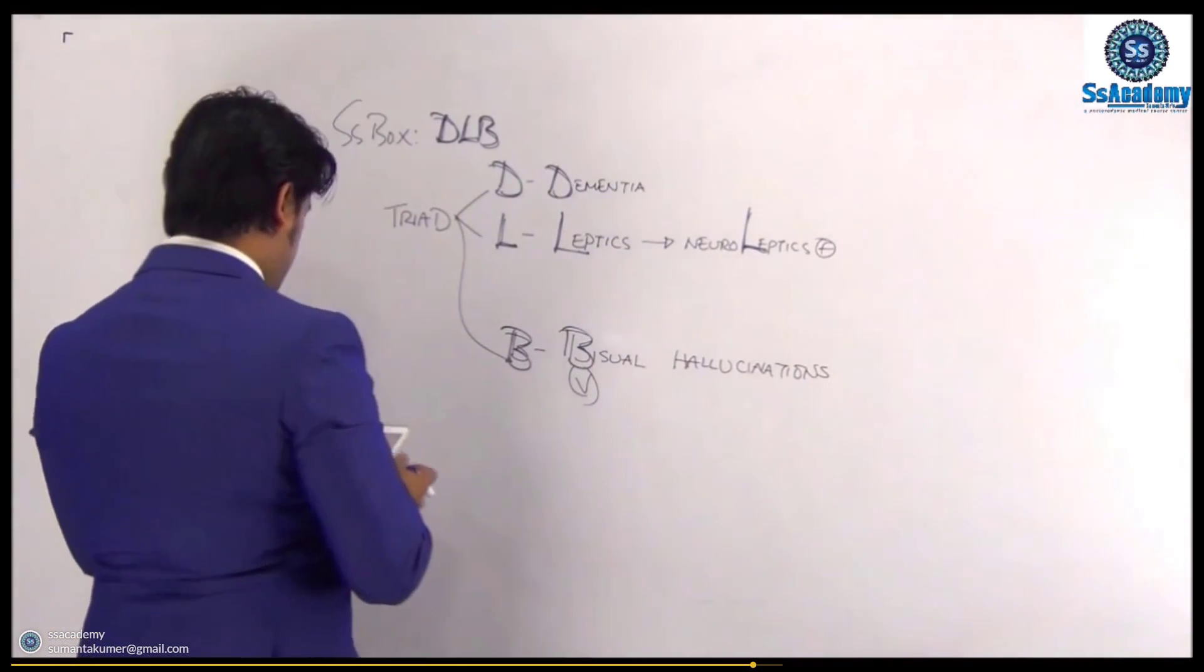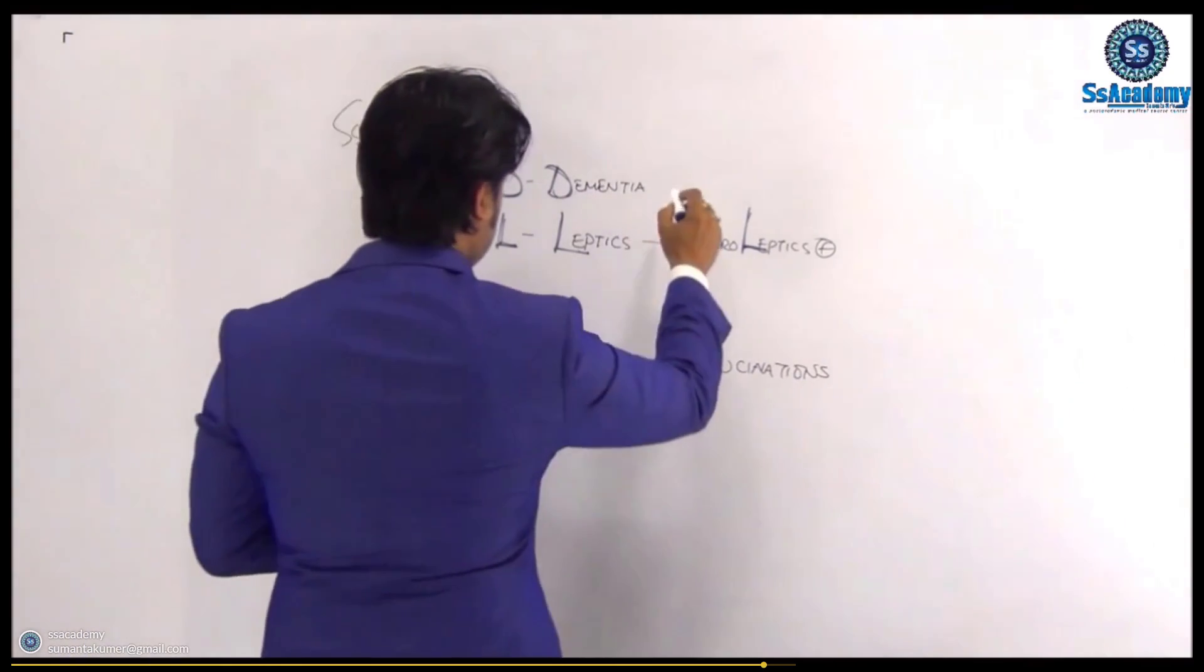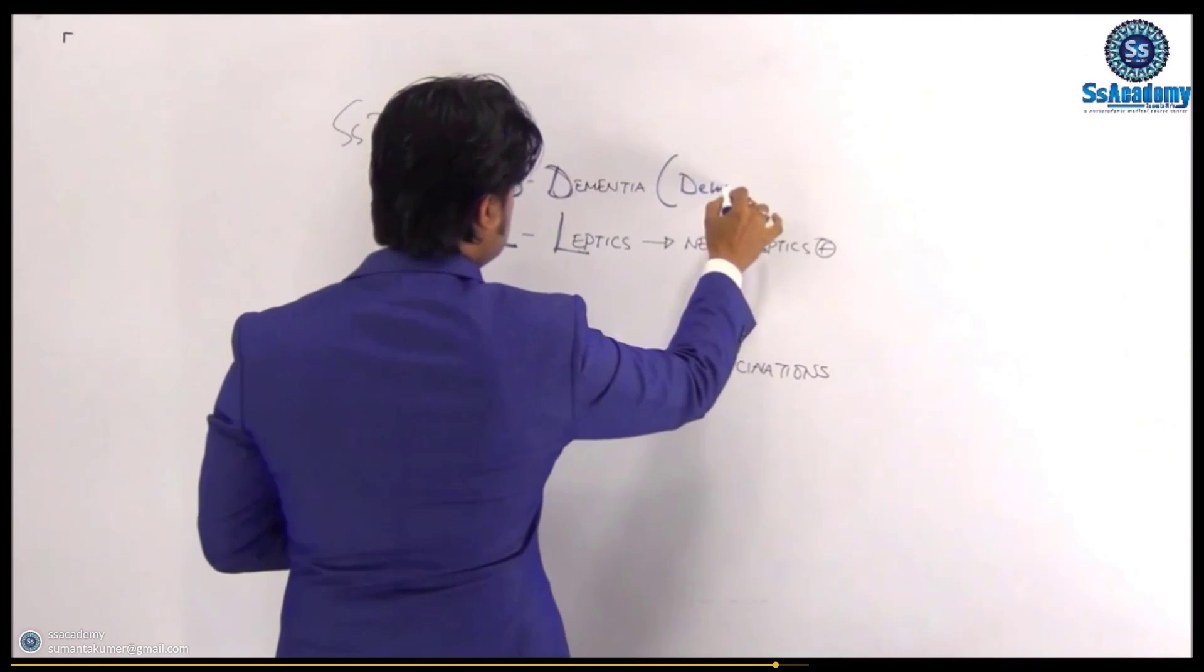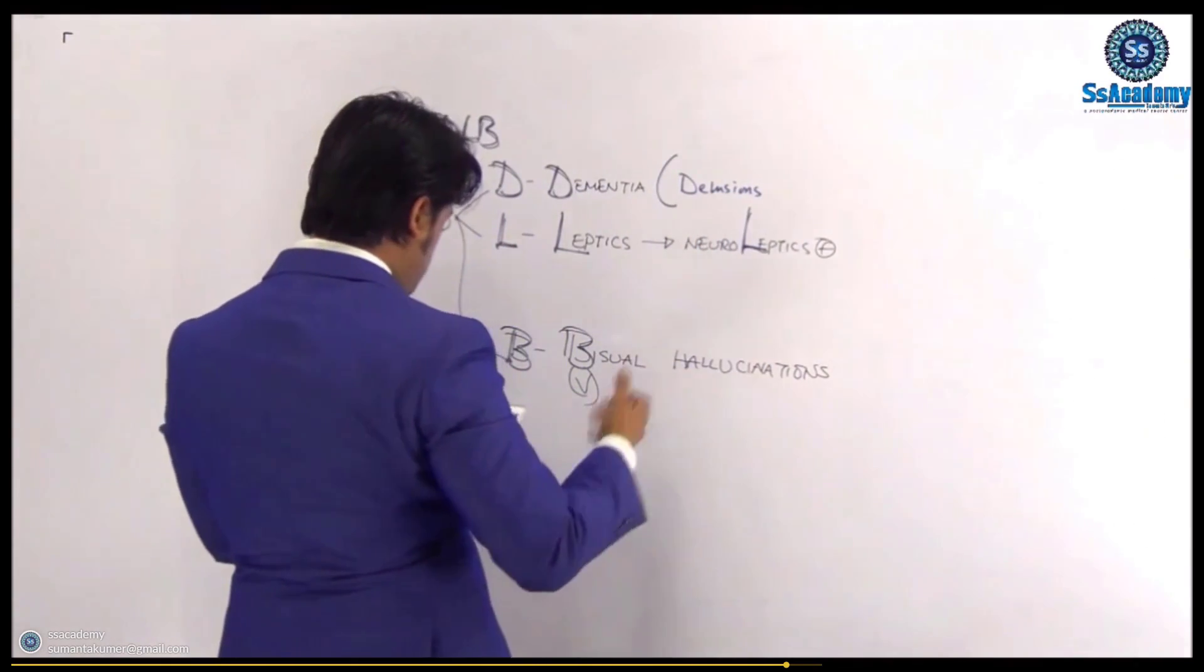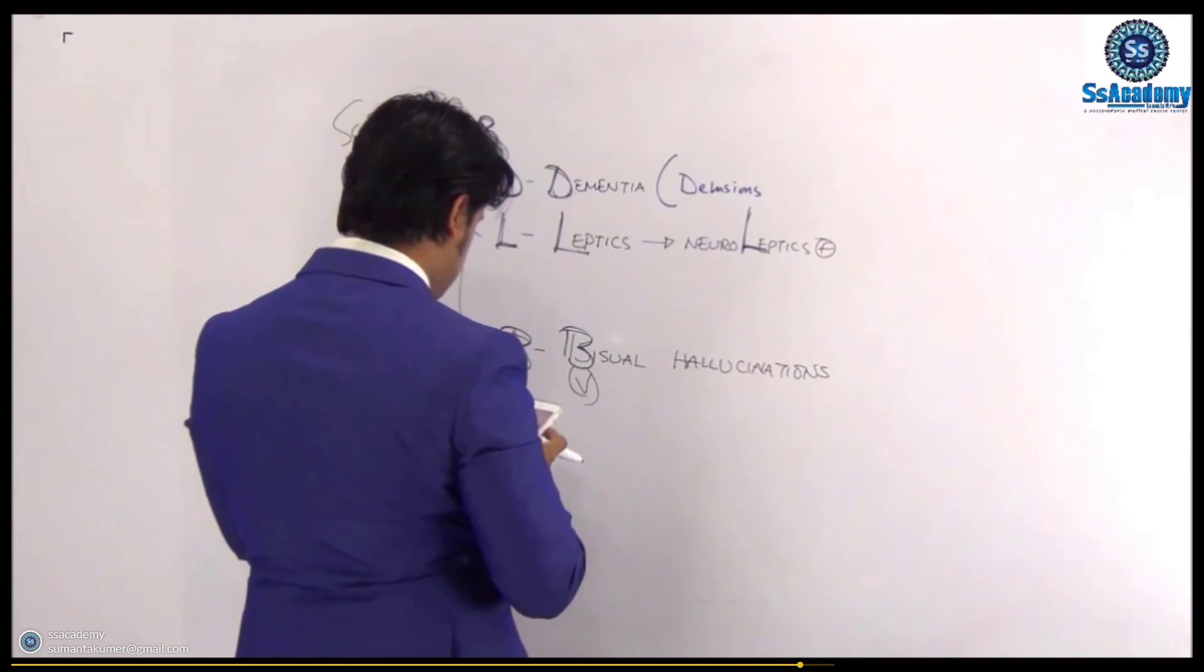And once again, I'd like to add something more. Sometimes they can have D for delusions and non-visual hallucinations can sometimes be present. So we can write there all together.